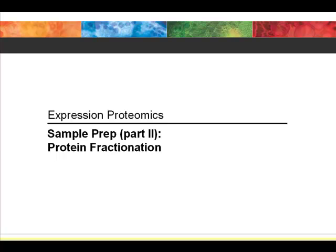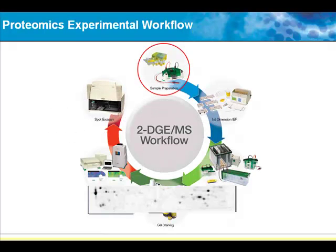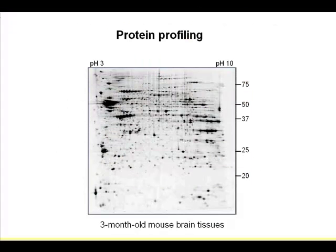This is part two of the sample prep — I want to focus on protein fractionation. After doing so many protein profiling of mouse brain proteins, I don't need mass spec anymore. I can point out what they are.